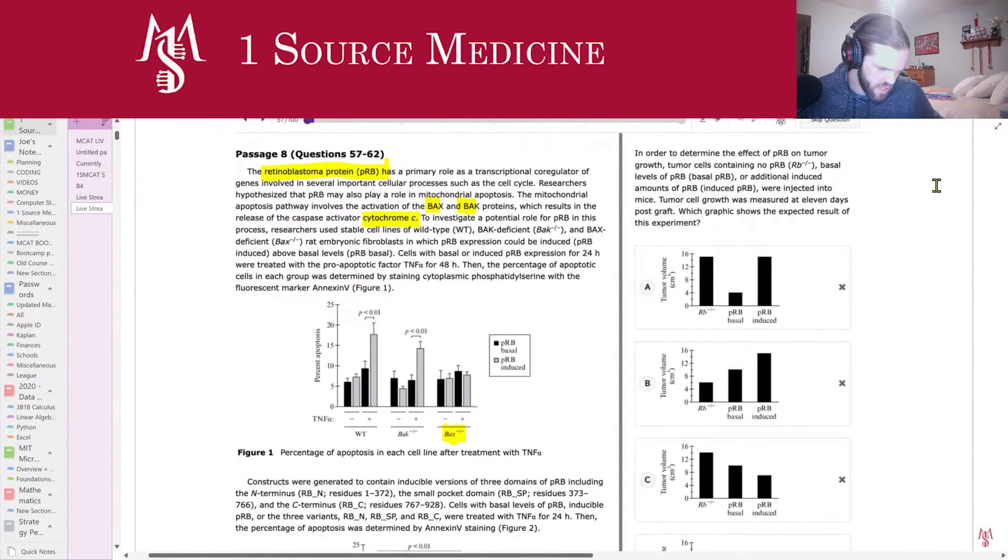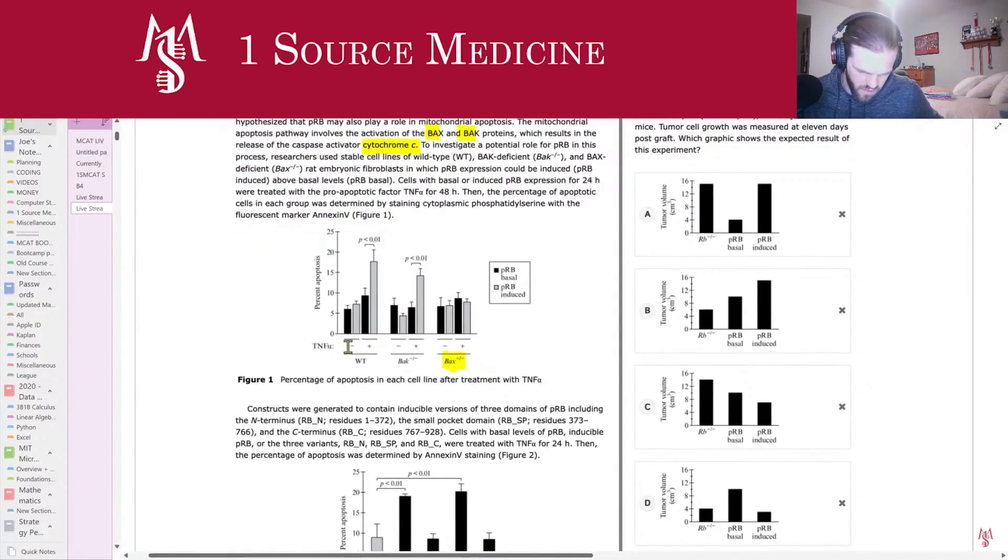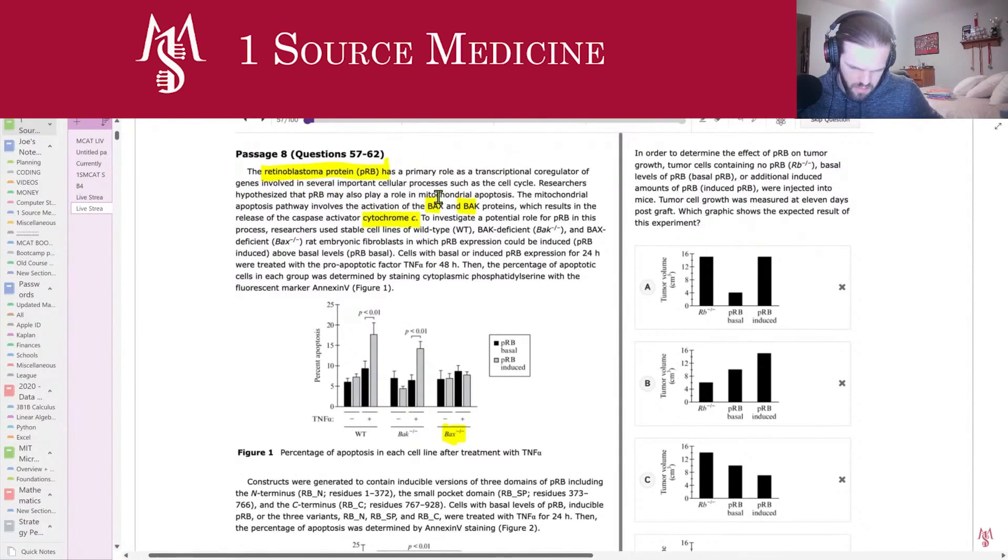Okay, so we do need to tell whether PRB is going to be pro-tumor or not from all of this stuff over here. It's saying PRB may also play a role in mitochondrial apoptosis. Do you think that higher levels on this graph means it's more or less likely to have cancer? Because that's kind of going to determine which one of these is.